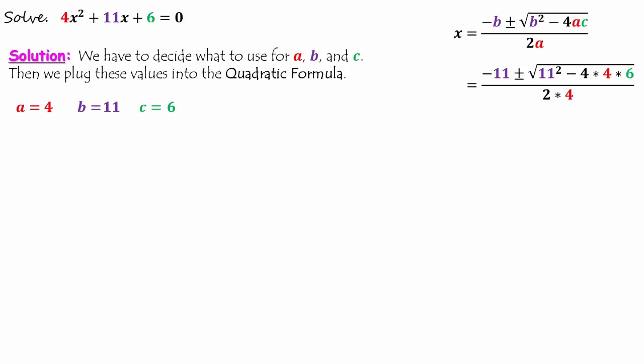At this point we should try to simplify as much as we can. For the denominator we have 2 times 4, which equals 8. Inside the square root we have 11 squared, which is 121.